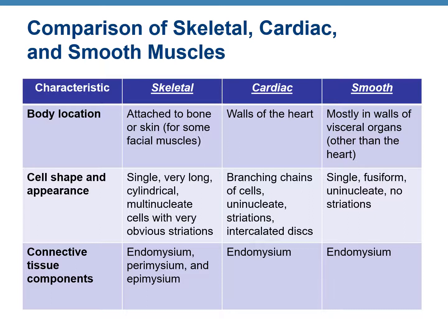Coming to cell shape and appearance, skeletal muscles are long, cylindrical, multinucleate, and they have striations — that means stripes. Cardiac muscles are branched and short, they are uninucleate, they also have stripes, and they have intercalated discs. Smooth muscles are spindle-shaped, uninucleate, and there are no striations.